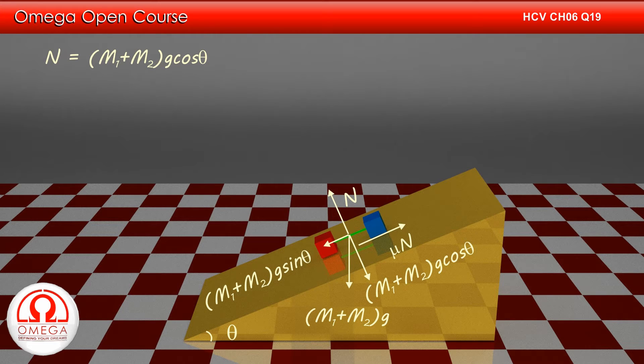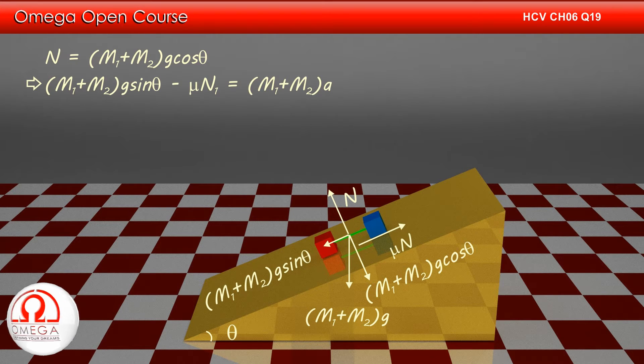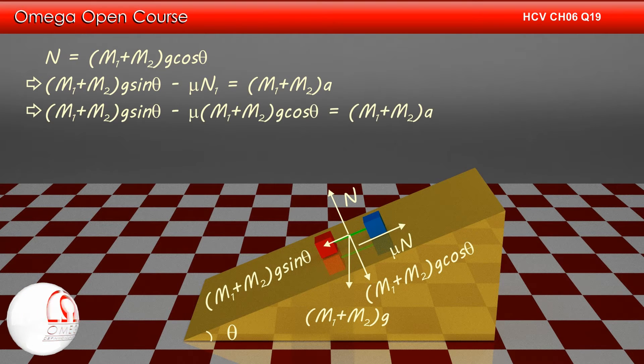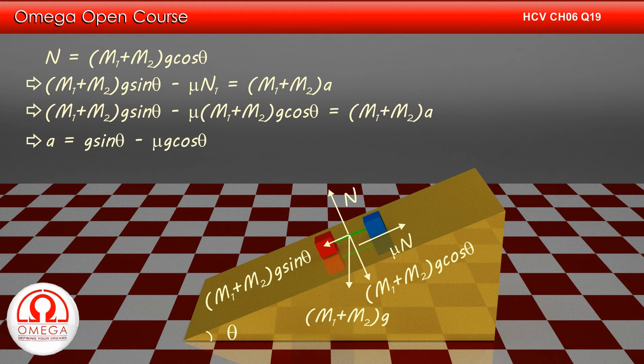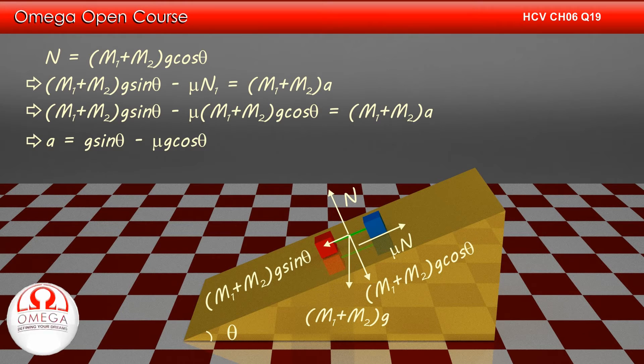Writing the equation for motion along the incline, we get (M1+M2)g sin theta minus mu N equals (M1+M2)a. Putting the value of N, we get (M1+M2)g sin theta minus mu(M1+M2)g cos theta equals (M1+M2)a, which implies a equals g sin theta minus mu g cos theta. This is the answer to the first part of the question.